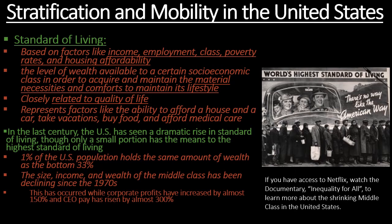In all stratification systems, each tier is defined by its standard of living, based on factors like income, employment, class, poverty rates, and housing affordability — the level of wealth available to a certain socioeconomic class to acquire and maintain the material necessities of its lifestyle. Standard of living, sometimes called quality of life, represents the ability to afford a house, a car, vacations, food for your family, and medical care.